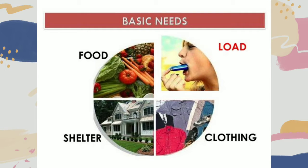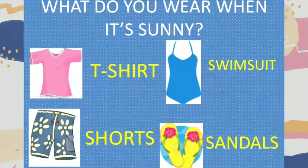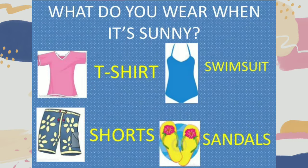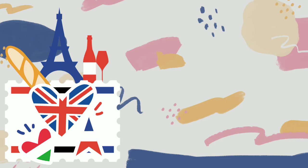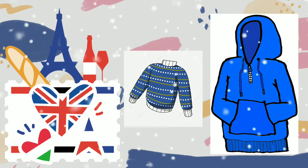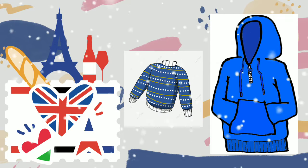Need is a state of deprivation of some basic satisfaction. For example, you need to eat food, you need to have clothes, you need to have shelter, you need to have your belongings. So when we say clothes, we have different types of clothes depending on the weather — like if it's sunny, or if it's raining, or if you are in another country, you need to wear a variety of clothes to protect yourself from the cold or the snow.